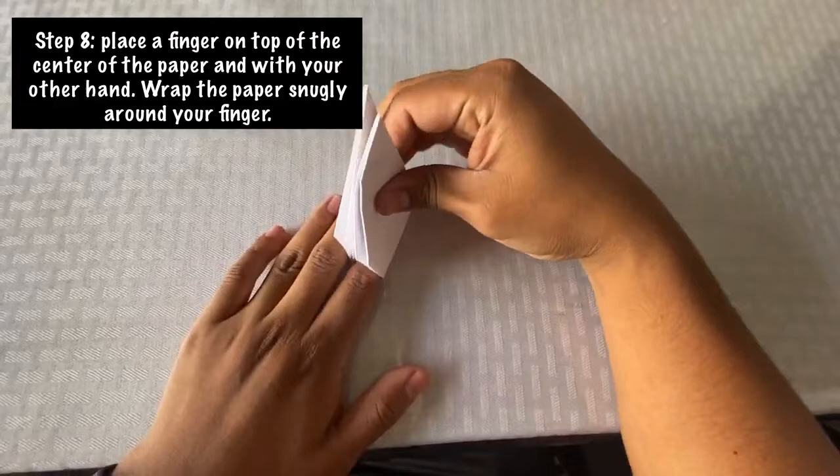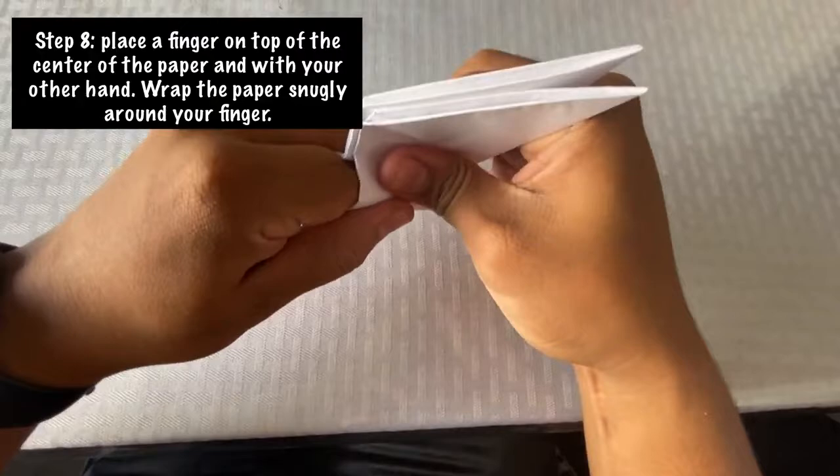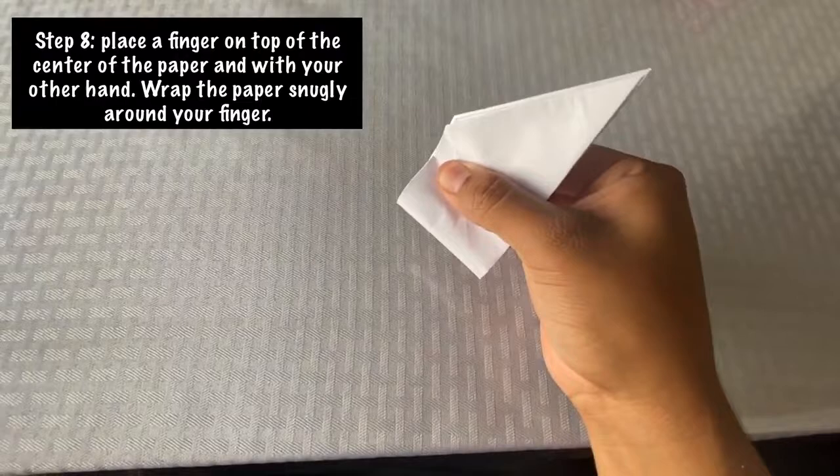Step 8: place a finger on top of the center of the paper, and with your other hand, wrap the paper snugly around your finger just like that. Make sure you leave space for your finger, and then carefully take your finger out, leaving that mark there, that finger space.